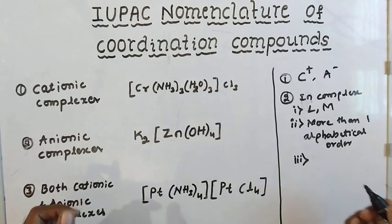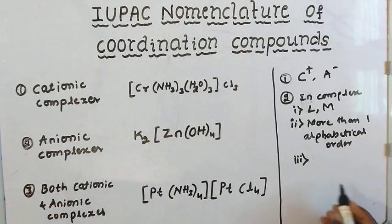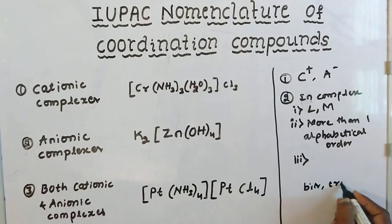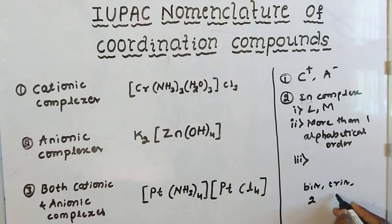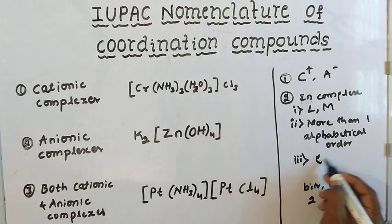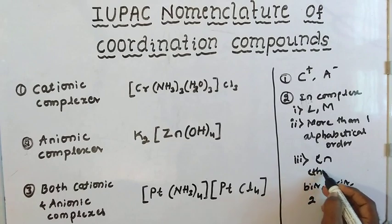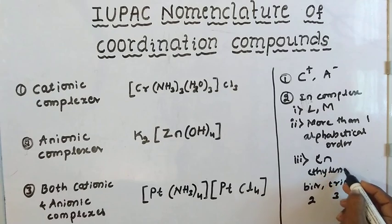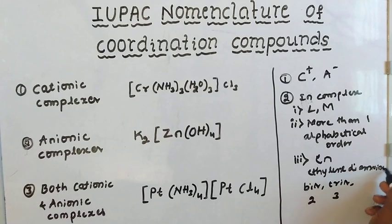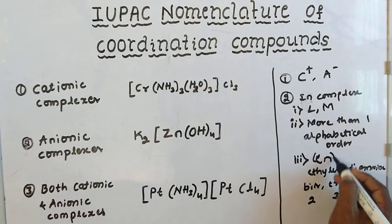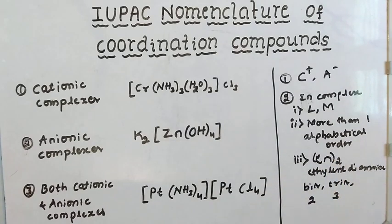When there is more than one of the same ligand, we use prefixes like di, tri. But if the ligand name is already complex — for example, ethylenediamine — we use bis, tris instead. Suppose this ligand is already named; it is called ethylenediamine.